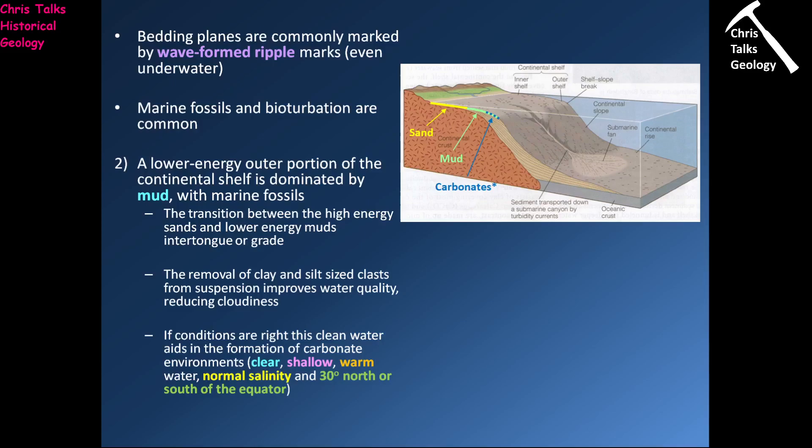This diagram shows the general breakdown of the continental shelf. We have the higher-energy inner portion, marked in yellow, which is dominated by sand. As we head out further, things begin to become a lot more stable. The energy decreases and we move into an environment which is dominated by muds.